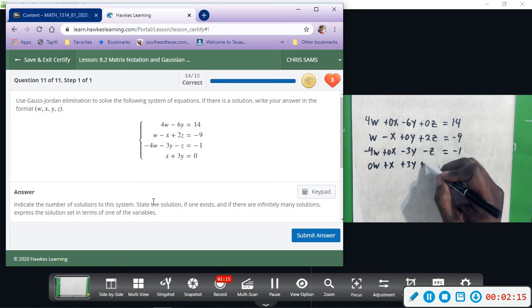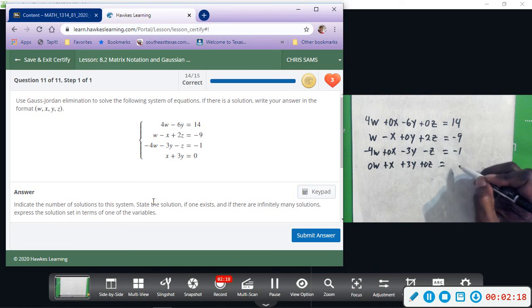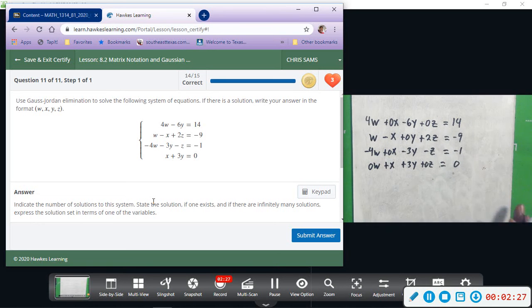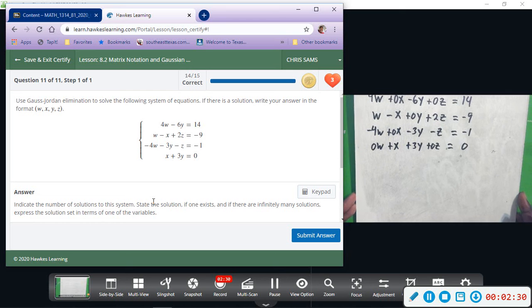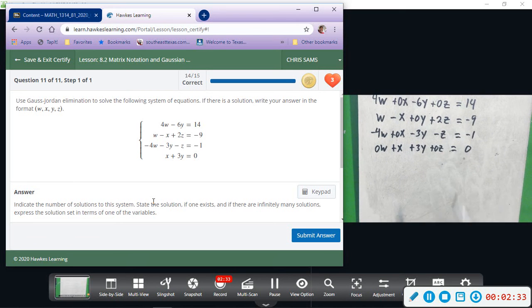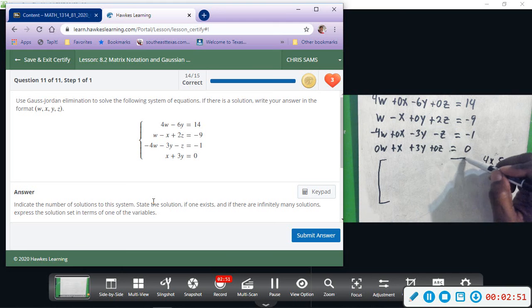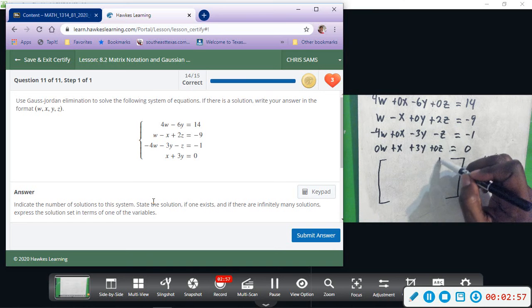All right, so this is your equation, and again this will take a lot of time doing by hand. That's why the matrix is much faster and we're going to do it with the technology. I'm going to write the matrix down. Now we have 1, 2, 3, 4 rows and 1, 2, 3, 4, 5 columns, so we have a 4 by 5 matrix this time that we're going to solve. I'm going to go ahead and insert everything right here by hand and then I'm going to put it in the calculator.